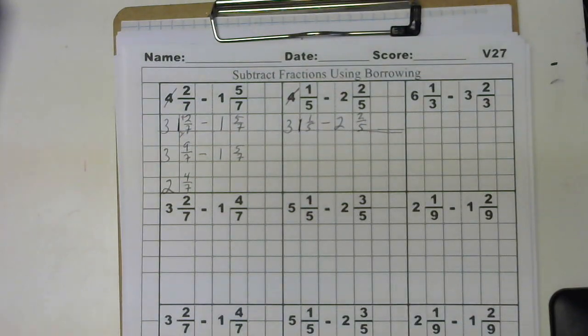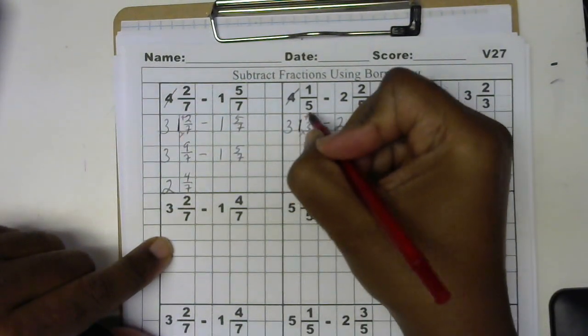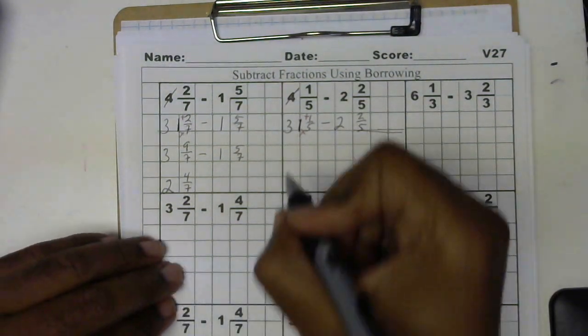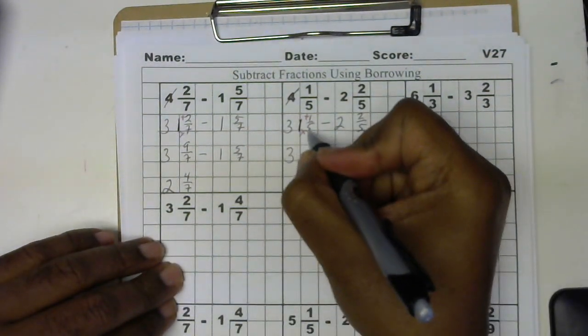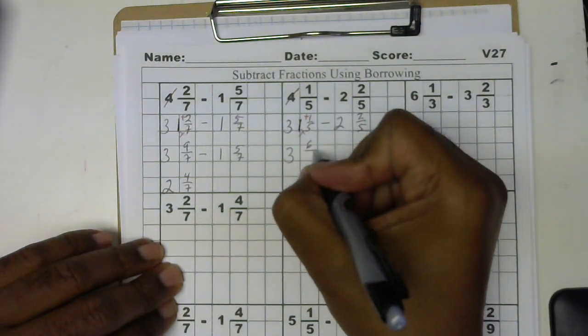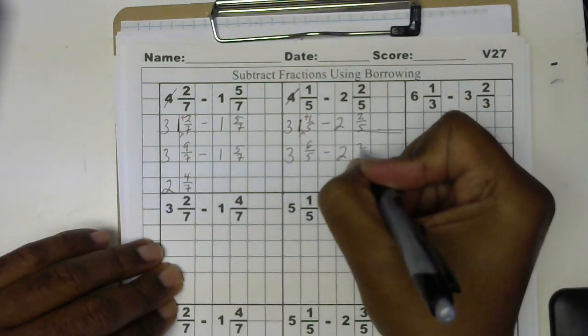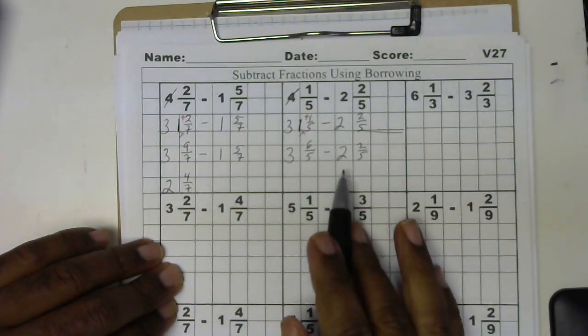So I'm going to multiply by this 1 and add to the numerator. So the 3 comes down. 5 times 1 is 5 plus 1 more is 6 over 5 minus my 2 and 2 fifths. Now I can subtract.